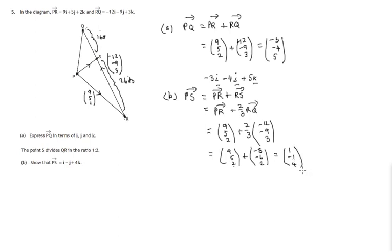So there's the components of the vector PS, the vector that it represents is represented by PS. And that equals 1i minus j plus 4k. So that's part b finished, let's have a look at part c. Hence, find the size of angle QPS.